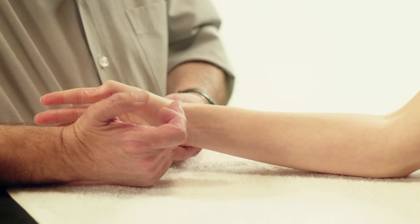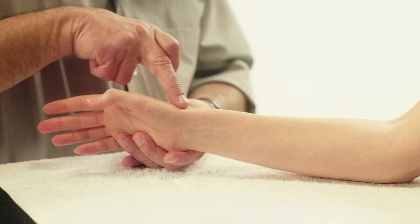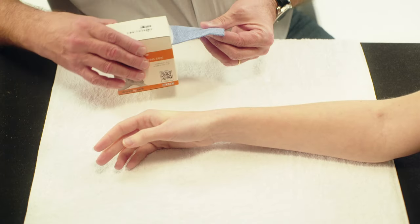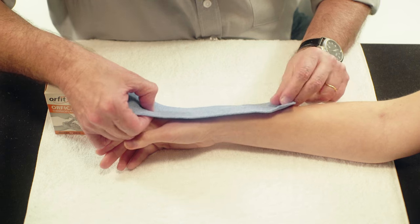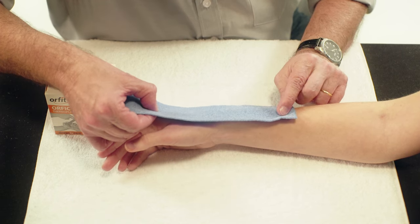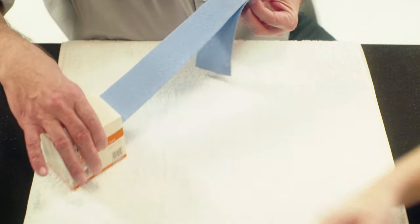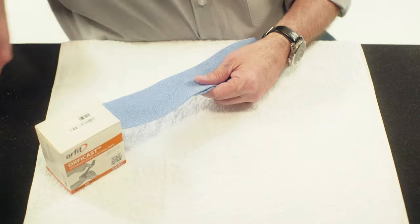This is a tendinitis of the extensor tendons of the first dorsal compartment. Cut two strips of Orficast 6 cm wide. Measure each two times the length from the thumb to the middle third of the forearm and cut the Orficast accordingly.